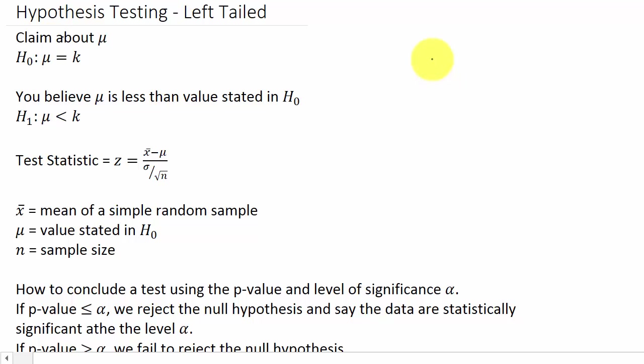For hypothesis testing we've got the claim about mu, the population mean. We will say H naught, the null hypothesis, is mu equals some number k. That's what we're testing. We believe that mu is less than the value stated in the null hypothesis H naught. Our alternate hypothesis H sub 1—now I use H sub 1, in some textbooks for the alternate hypothesis they may use H with the subscript a, it's the same thing.